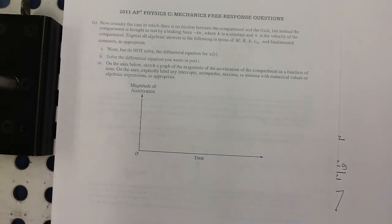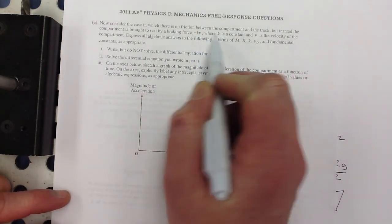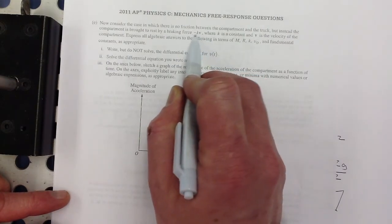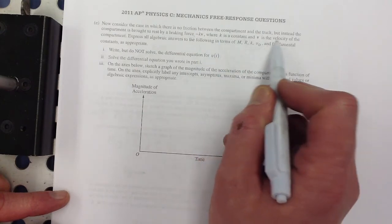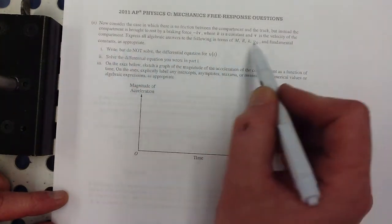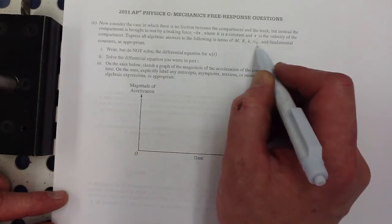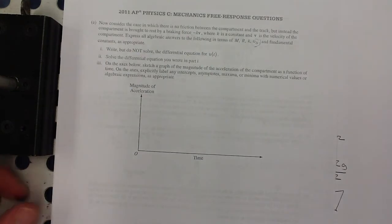Now, consider the case where there's no friction between the compartment and the track, but instead the compartment is brought to rest by a braking force negative kv. So, that's like air resistance. Right? It's a constant times the velocity, where k is a constant and v is the velocity of the compartment. Express all algebraic answers, blah, blah, blah. You can say in terms of v, so you don't have to use your expression. You can use that.